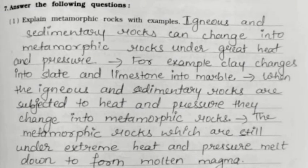Now Question 7 — Answer the following questions. First: Explain metamorphic rocks with examples. Igneous and sedimentary rocks can change into metamorphic rocks under great heat and pressure. For example, clay changes into slate and limestone into marble. When igneous and sedimentary rocks are subjected to heat and pressure, they change into metamorphic rocks. Metamorphic rocks still under extreme heat and pressure melt down to form molten magma.